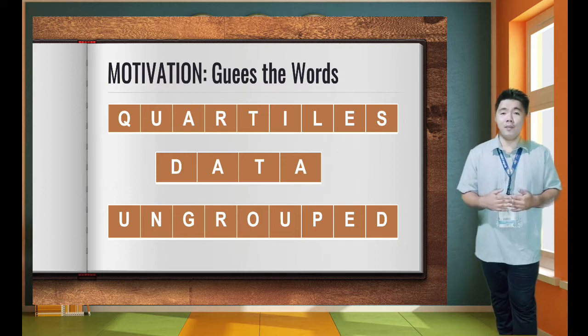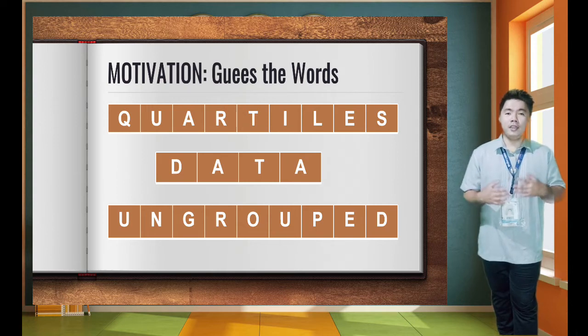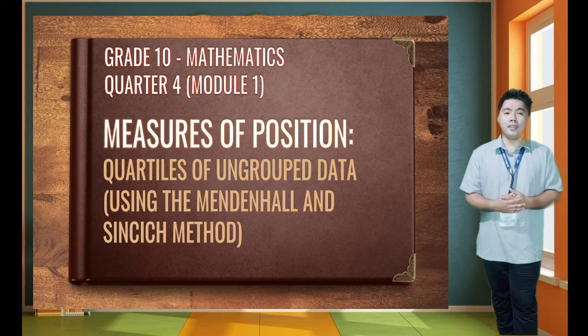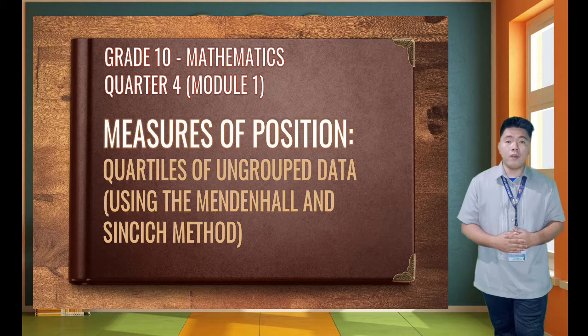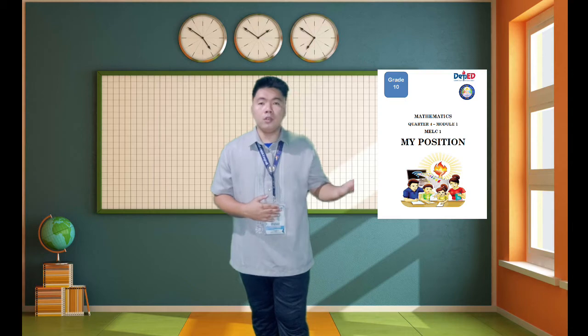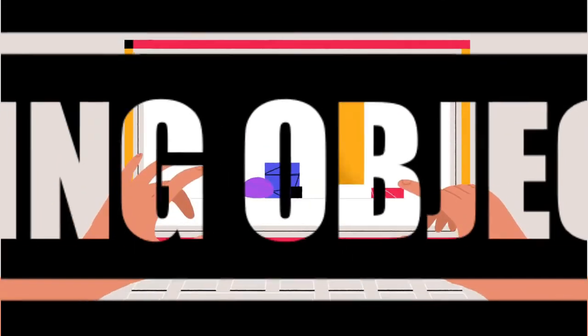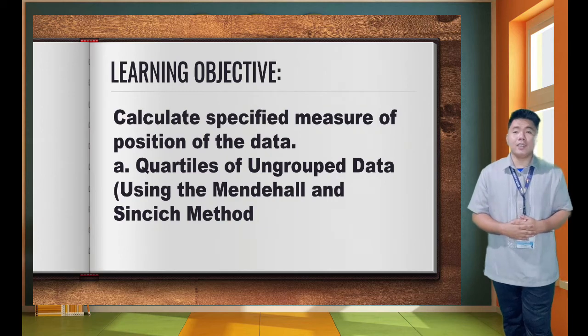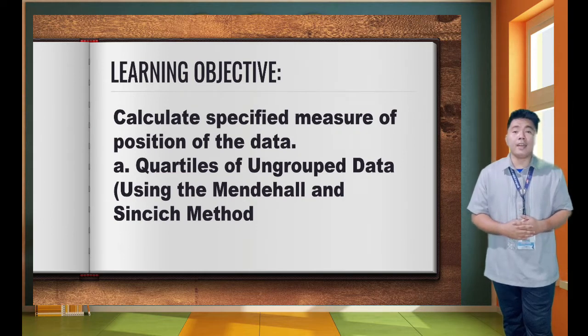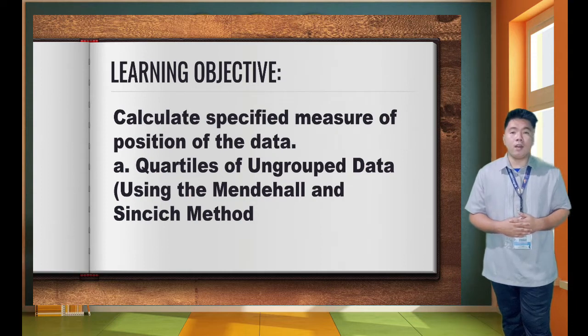Based on that activity, our next lesson is quartiles of ungrouped data using the Mendenhall and Sincich method. Before we proceed, make sure you have your module, pen, and paper. Our learning objective is to calculate the specified measure of position of the given data — specifically, quartiles of ungrouped data using the Mendenhall and Sincich method.